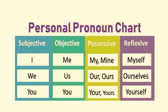You see, there are lots of pronouns. Here is a personal pronouns chart. Subjective pronouns: I, we, you. Objective pronouns: me, us, you. Possessive pronouns: my, mine, our, ours, your, yours. Reflexive pronouns: myself, ourselves, yourselves.